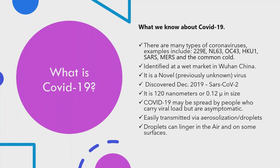It is a small molecule — 120 nanometers, or 0.12 microns for histotechs. Coronavirus may be spread person to person and requires a viral load to infect you. One particle may not cause an asymptomatic or symptomatic reaction; it takes multiple copies of that viral load. It's a matter of time and exposure, so it's very important to limit the time and amount of exposure to keep from getting COVID-19.